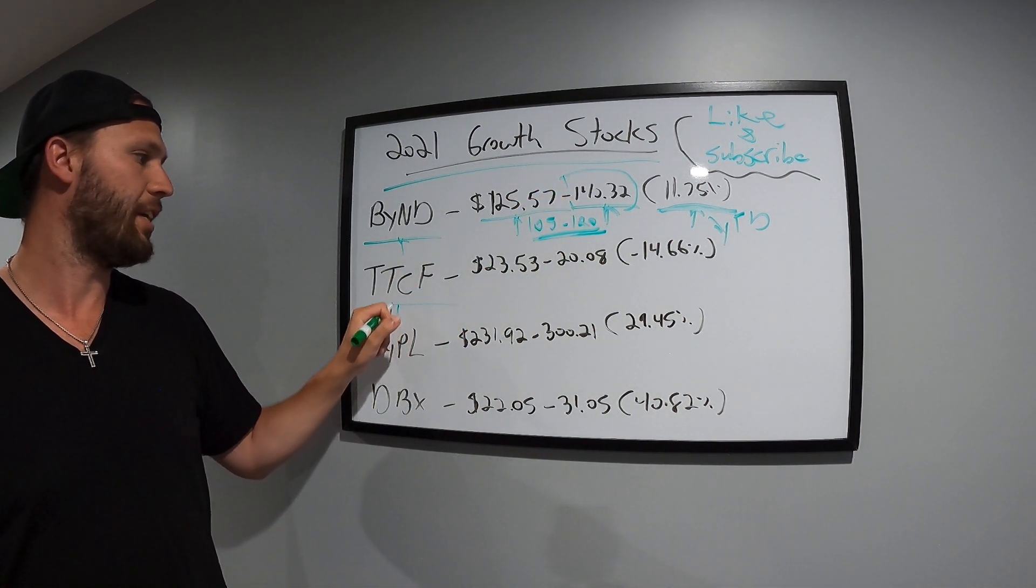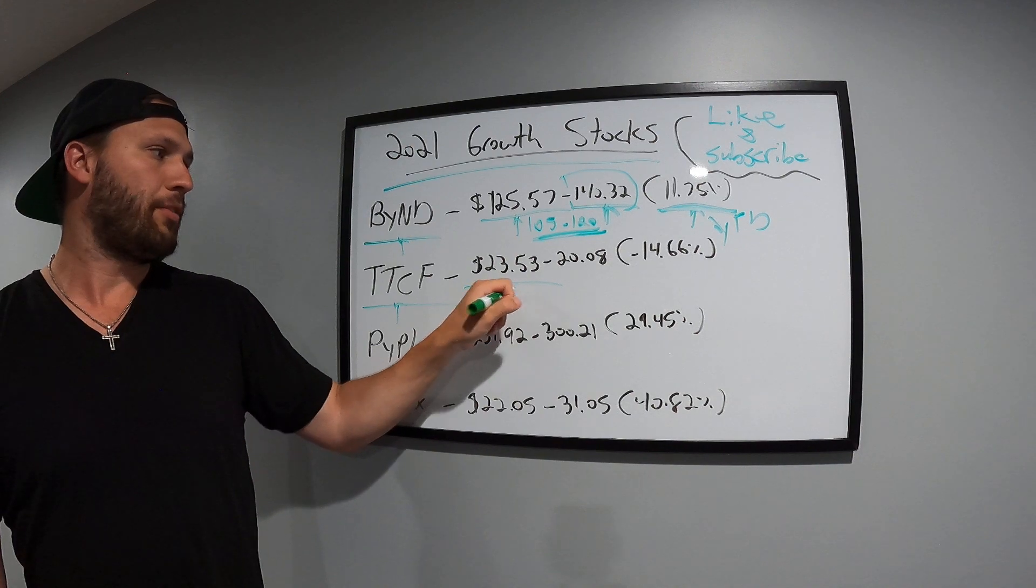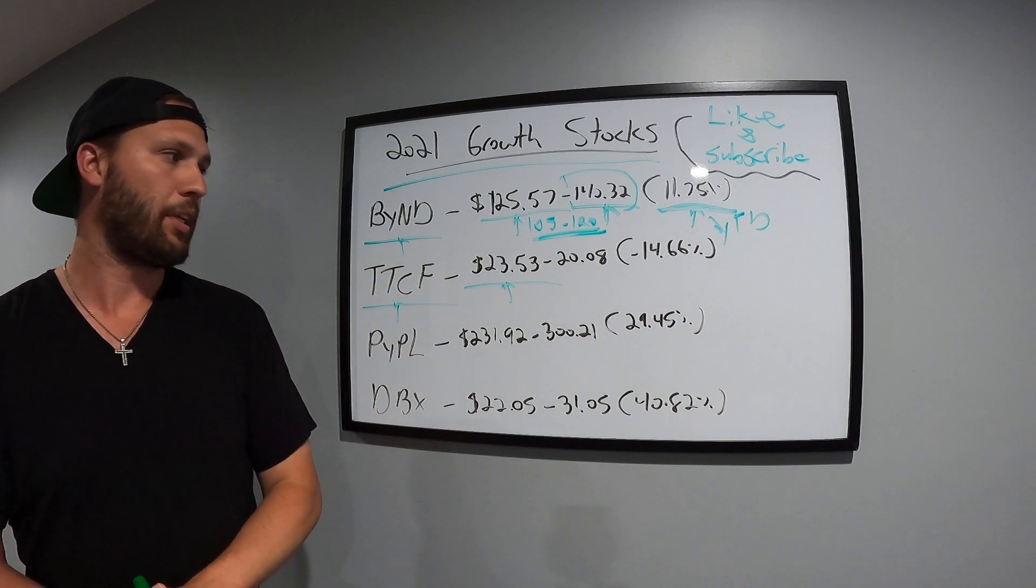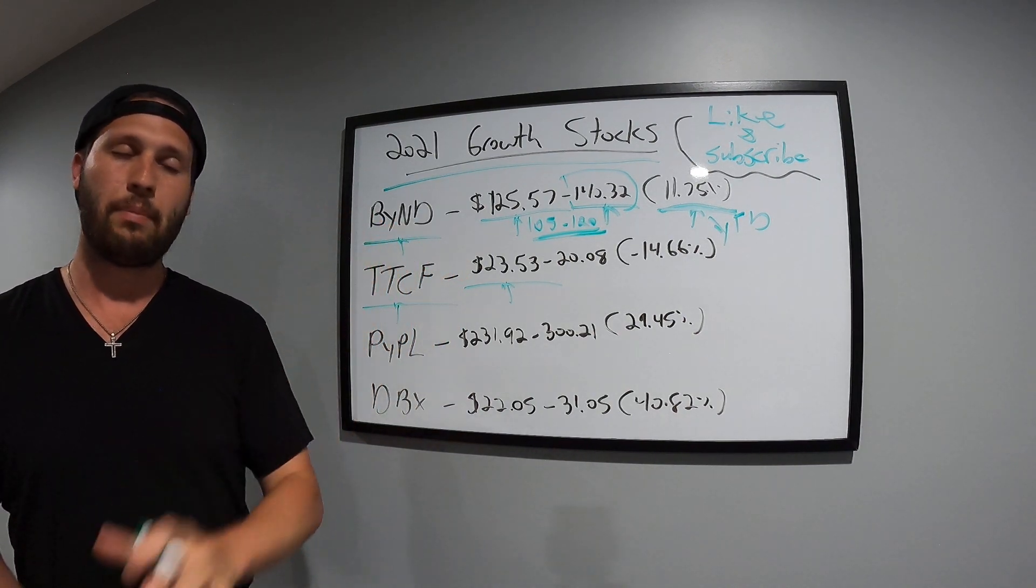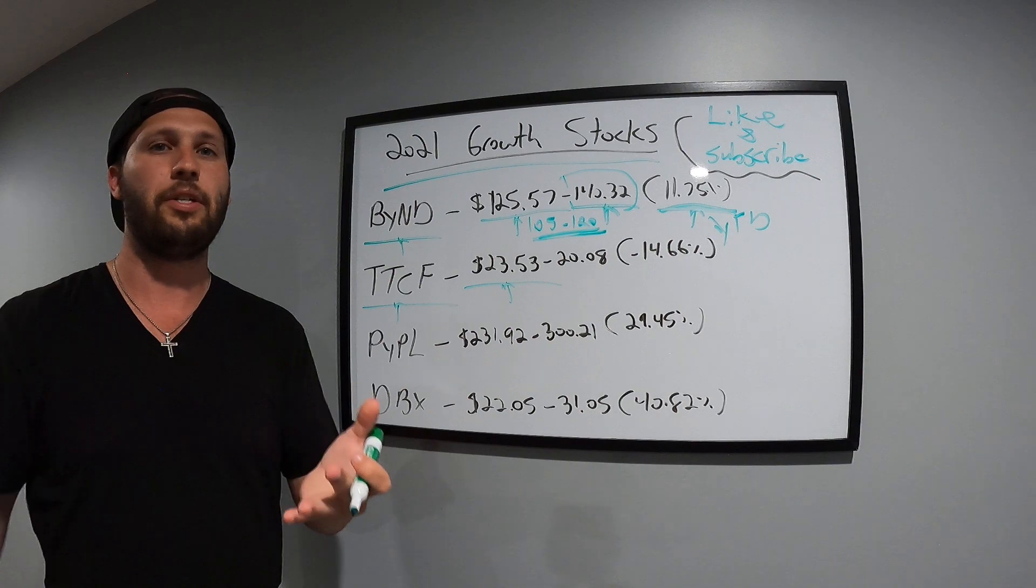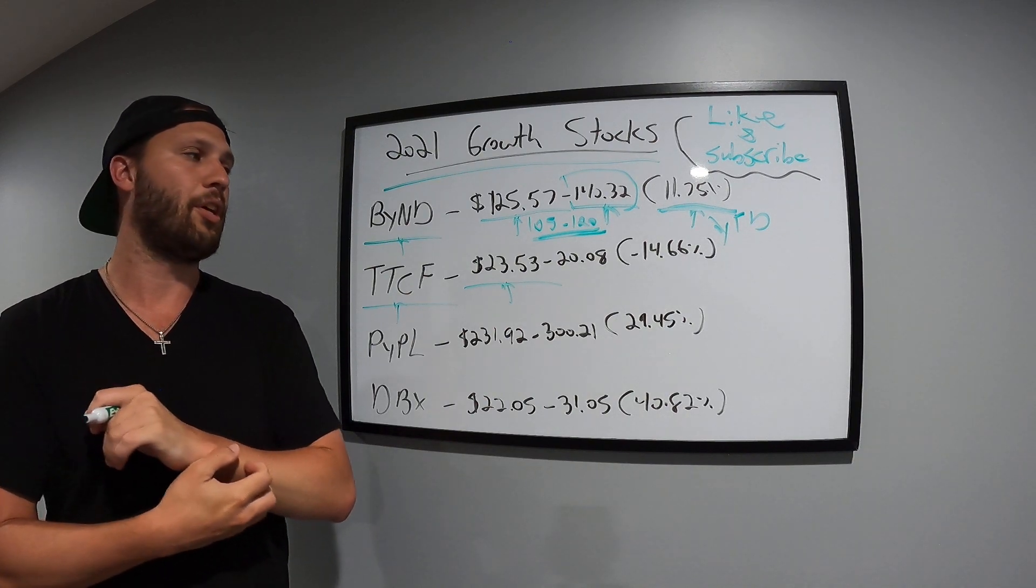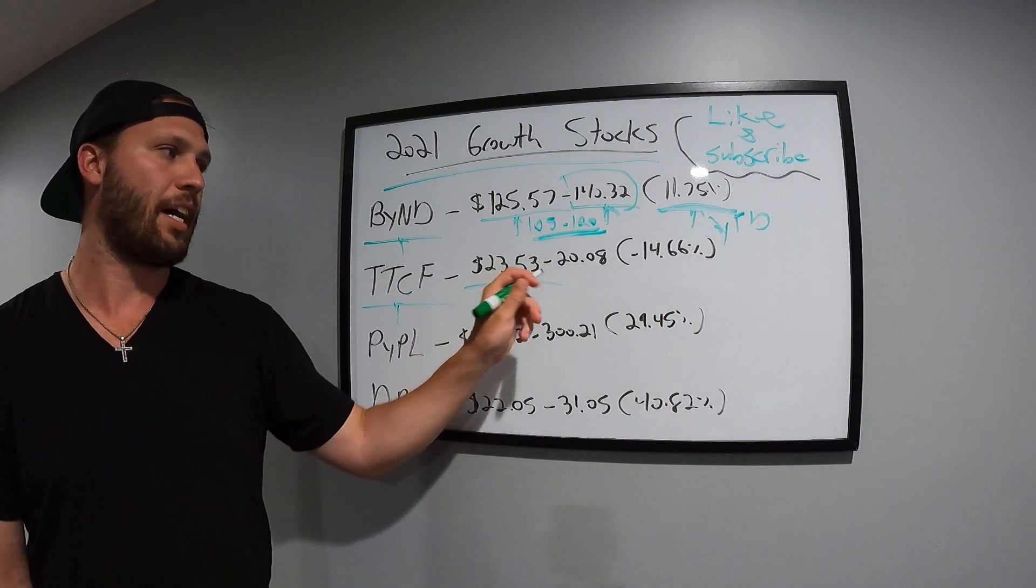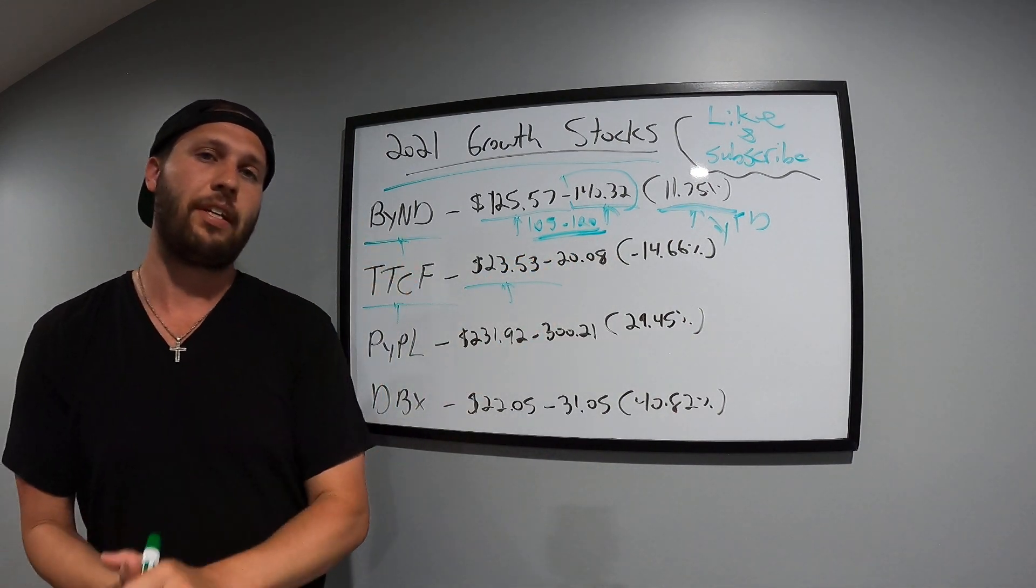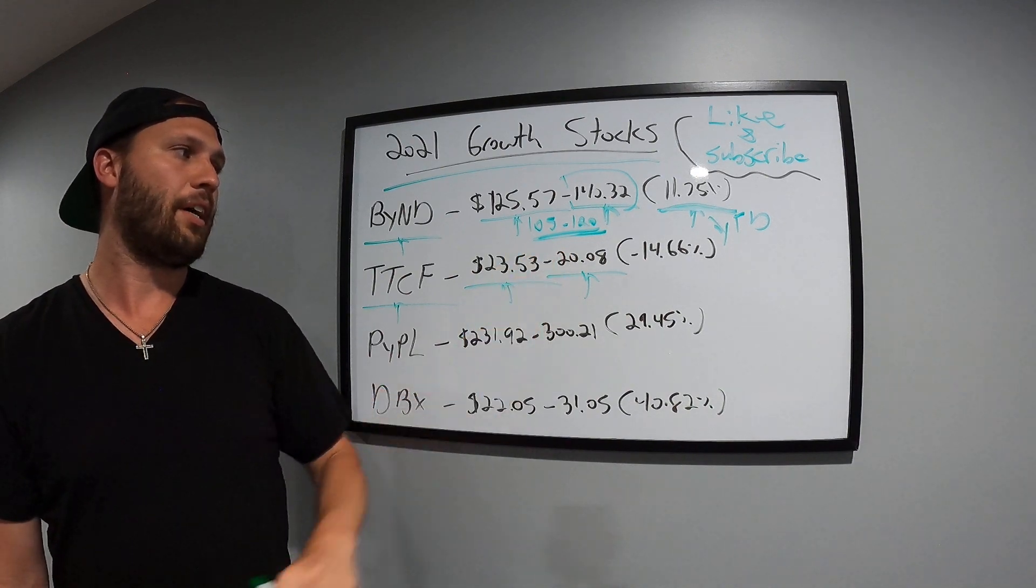Next stock is Tattoo Chef, TTCF. This is my second biggest position behind Tesla. Opened January at $23.53. This stock was really hot in the fall of 2020 and then into the winter of 2021. It had a really big correction. They've done nothing but beat earnings, beat revenue, opened new and signed new deals at Costco and Target and Sam's Club. They've been doing nothing but good things, but the stock has been getting beat down. It was at $15 a couple weeks ago. I was buying actively. If you watched my videos you would have saw that because I make videos whenever I purchase something.